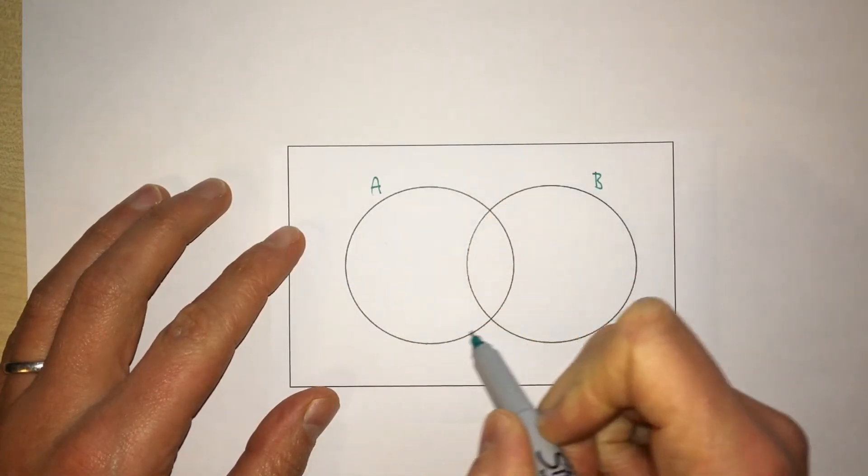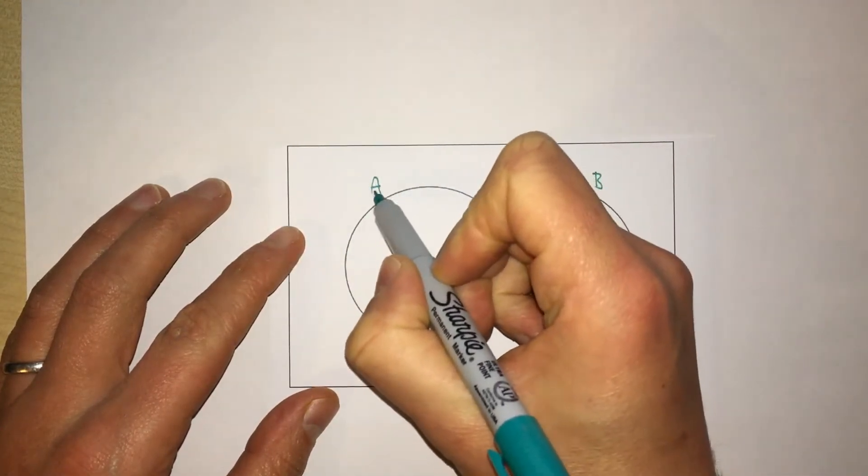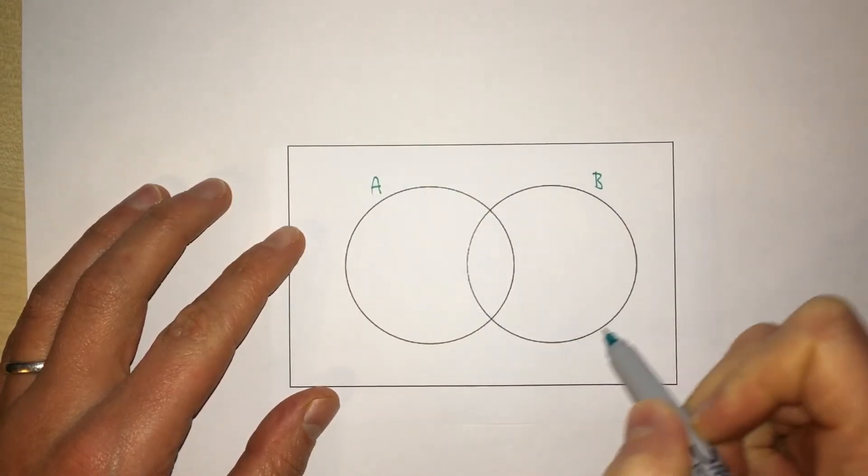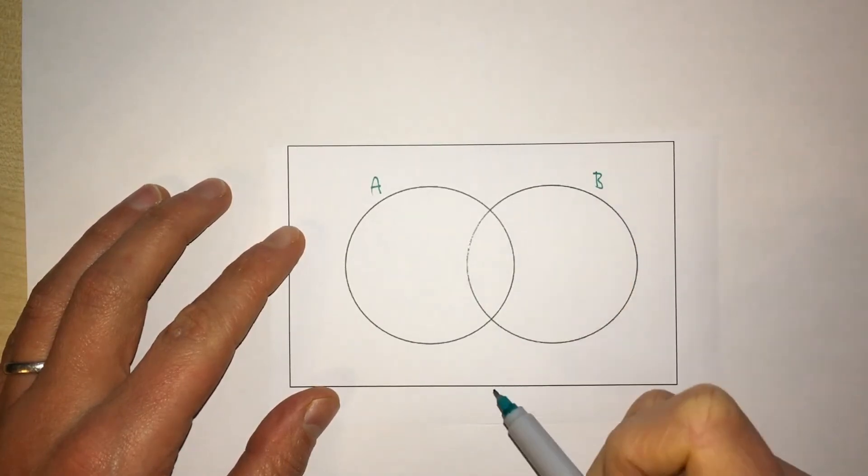The elements inside this circle A belong to set A, and the elements inside this circle B belong to set B.